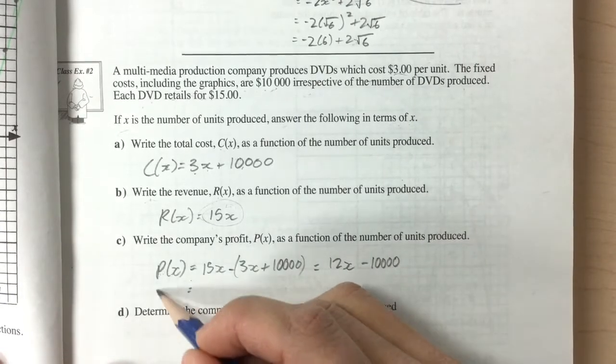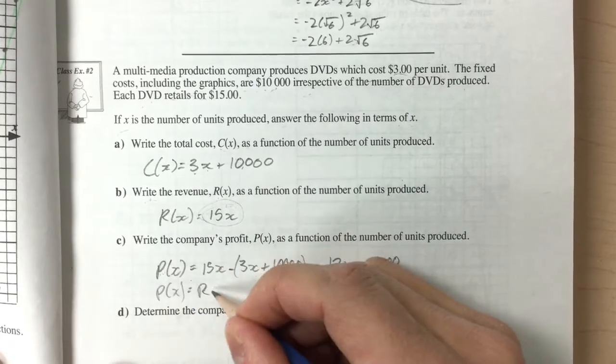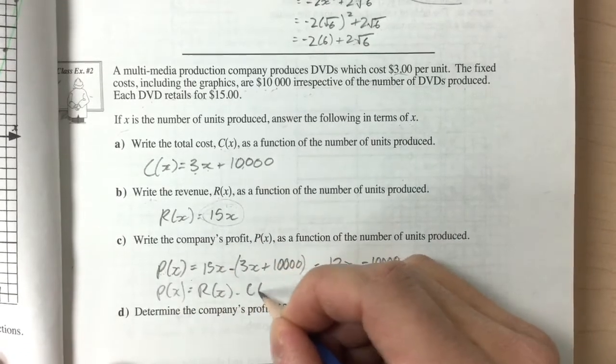Another way this can be written, so p of x, we can write this as r of x minus c of x.